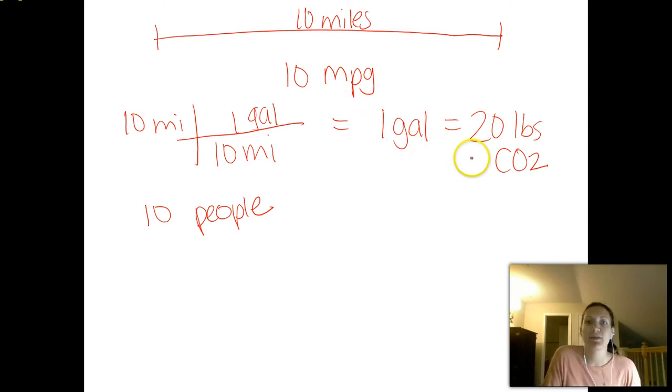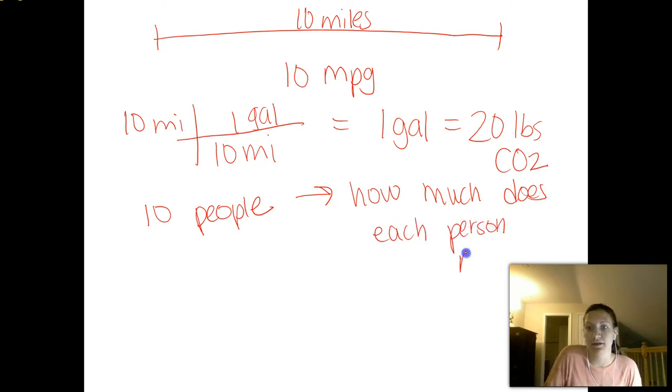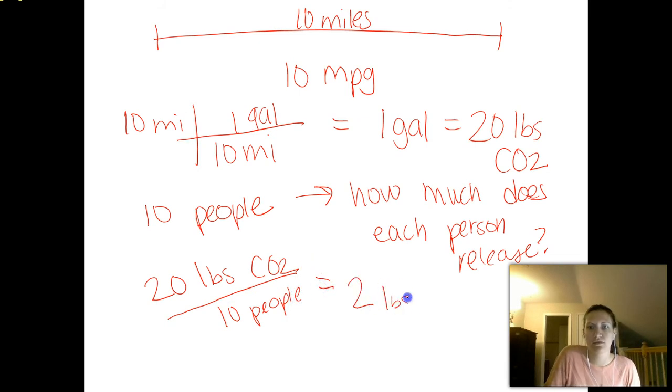So on a per-person basis, they're actually releasing less carbon dioxide. This 20 pounds of carbon dioxide is for that entire bus. But there's 10 people. So the question is, how much does each person release? It's not 20, because if each person was releasing that, that would actually be a ton. Instead, it's 20 pounds of CO2 divided by 10 people, which equals 2 pounds CO2 per person. So each person, if you look at the entire picture, each person is actually only contributing 2 pounds of CO2. That's better than driving a hybrid. That's better than driving your truck. You're actually releasing less on a per-person basis.